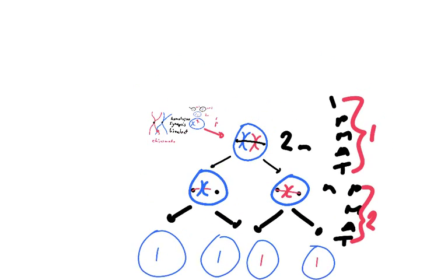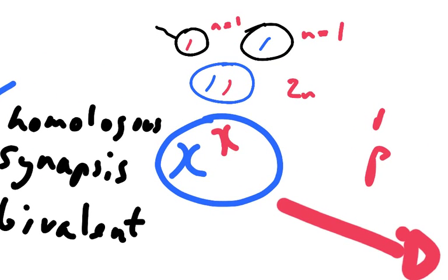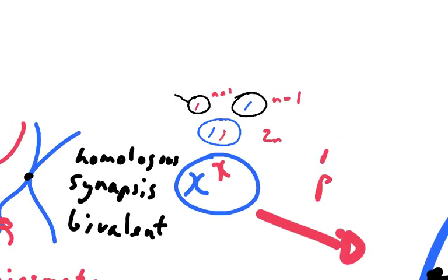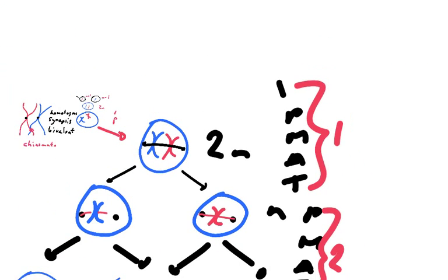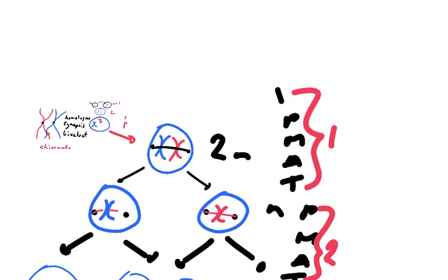Going back to where we started: a sperm and an egg each had one chromosome. They came together to produce a diploid cell. That diploid cell grew by mitosis, and then when it came to dividing, it needed to do a reductive division through meiosis. Meiosis began with interphase — DNA replication, protein synthesis, organelle synthesis — then prophase, where chromosomes condense and appear, carry out synapsis, form bivalents, and engage in crossing over: the exchange of information between maternal and paternal chromosomes.